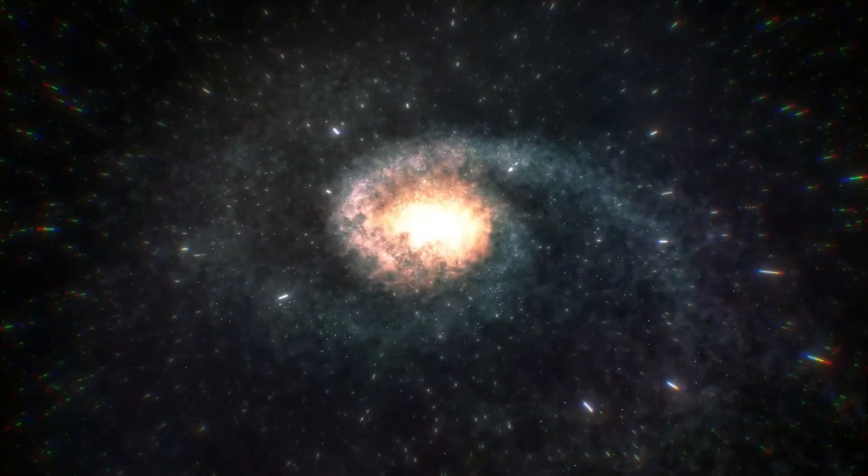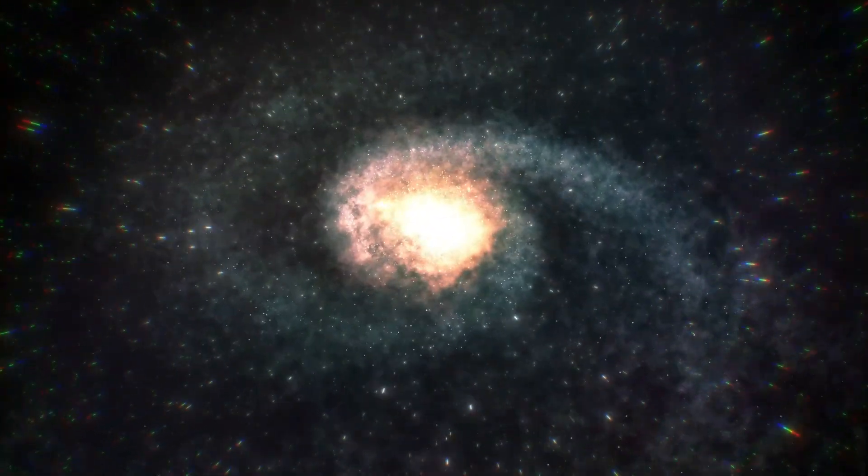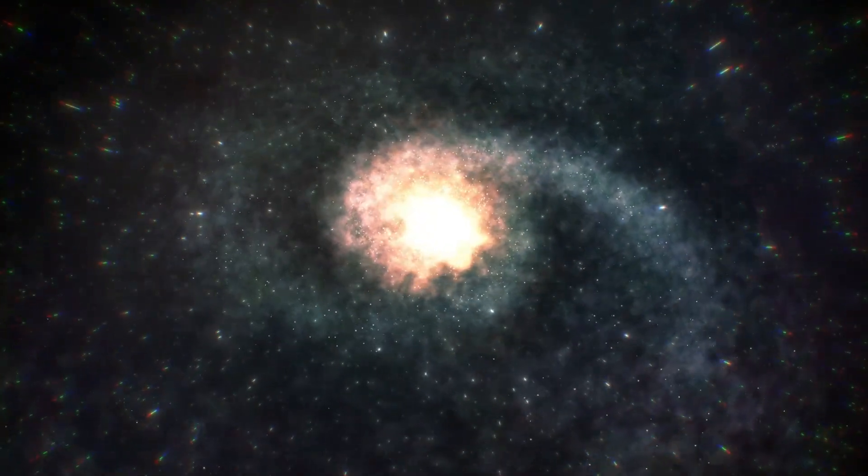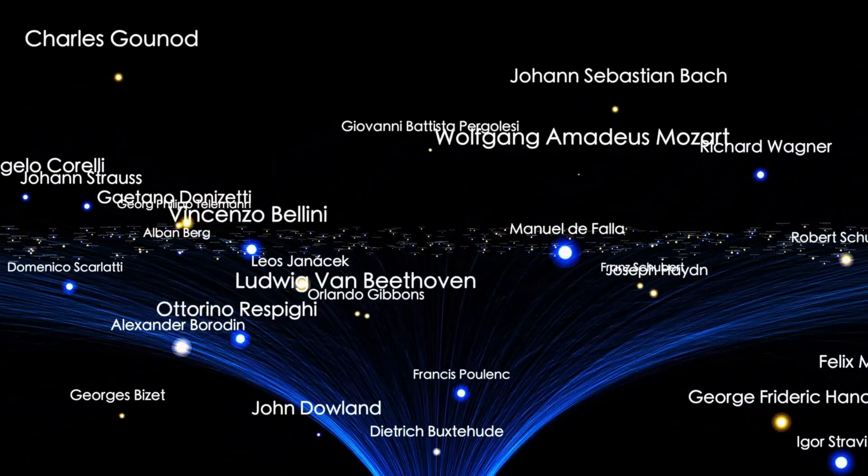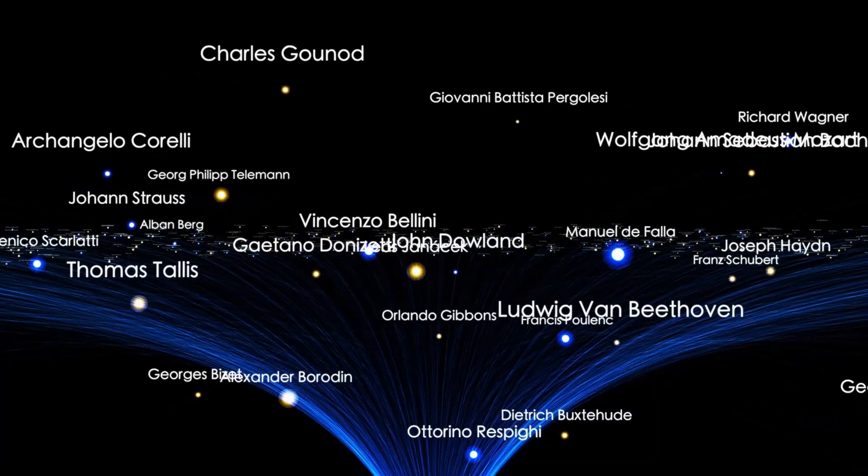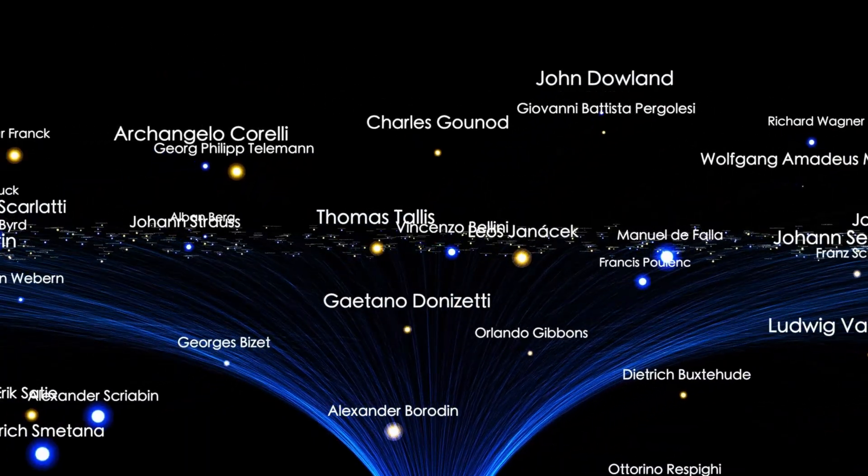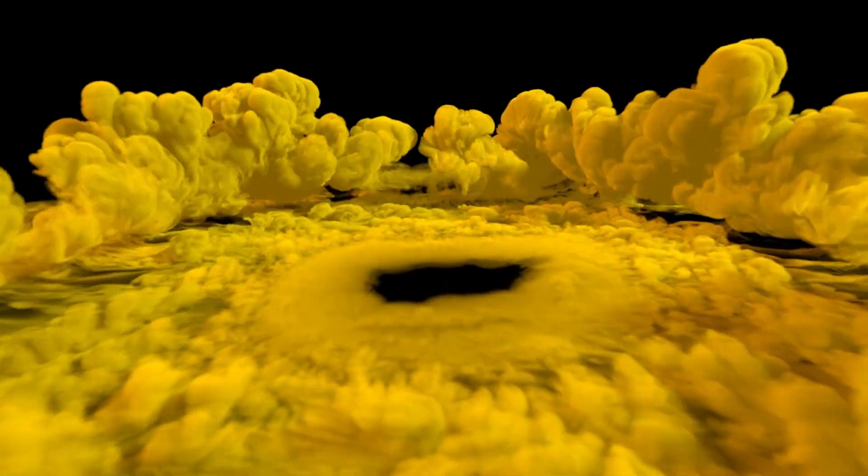Pisces Cetus is not the only structure containing the Virgo supercluster. The Laniakea supercluster also includes it. In short, the Pisces Cetus complex represents one of the largest and most massive structures in the observable universe.